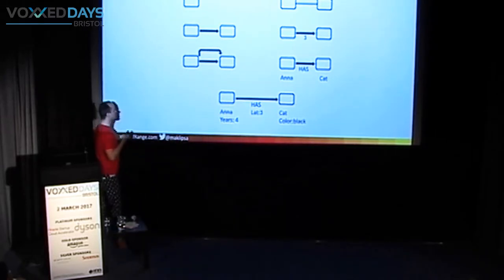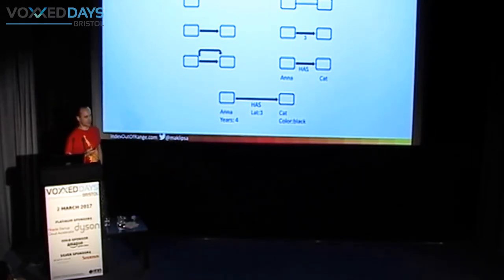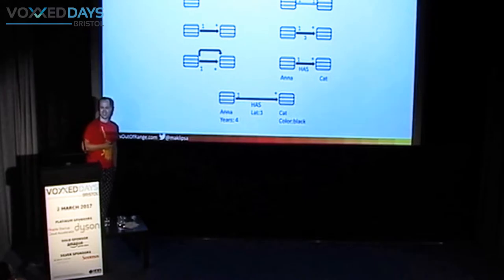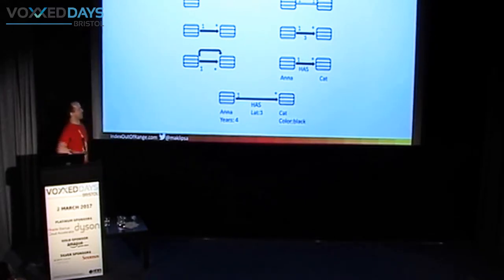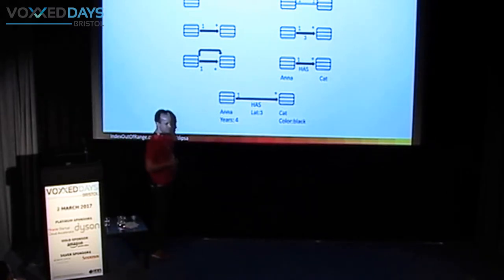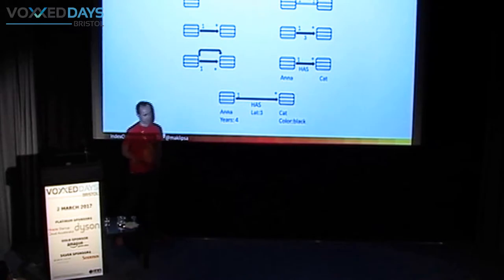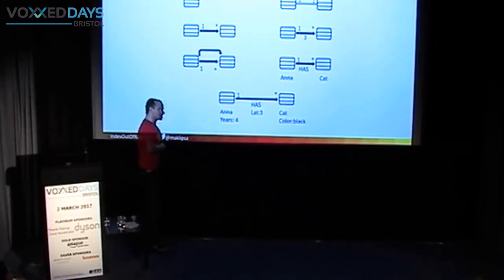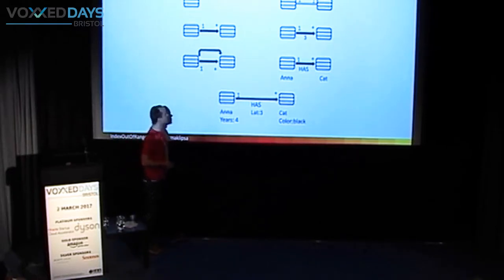Does this remind anyone of anything? There's a guy saying about graph databases, but graphs are about relations, and we have relational databases — so what's up? Well, actually it does make sense, because graph databases are quite the opposite of relational databases. To understand why, let's look at some history.